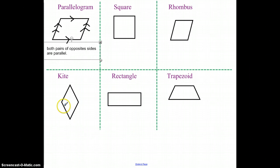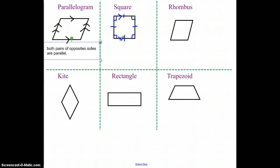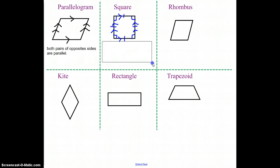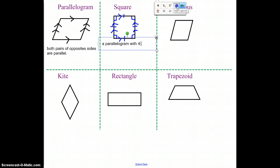Now if we go to a square — a square has right angles in all four corners, so it has four right angles. It also has four congruent sides, meaning all four sides are equal in length. And the opposite sides are also parallel: these two sides are parallel, and these two sides are parallel. So an important fact: a square is a parallelogram with four congruent sides.